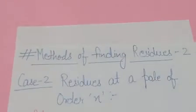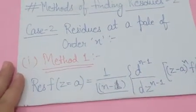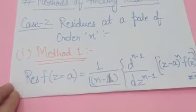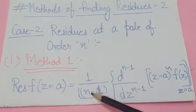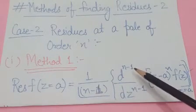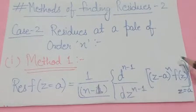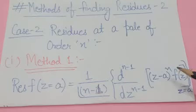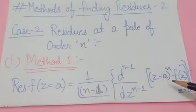Now, how to find the residue for a pole of order n. Method 1: for a pole of order n, the residue formula is 1 upon factorial(n − 1) times the (n − 1)th order derivative of [(z − a)^n · f(z)], evaluated at z = a. After finding the derivative of this complete function, put z equal to the pole value a. That gives your residue for a pole of order n.